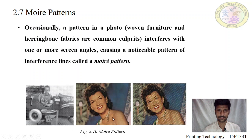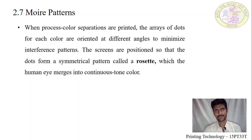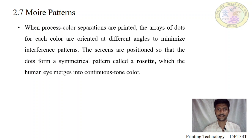This will show a blurred or out-of-focus result to the human eye. See this image — this is the original photo. If the screen angle is missed, we will get this type of output. In process color separations, the arrays of dots for each color are oriented at different angles to minimize this interference pattern or rosette pattern, which makes the human eye merge them into continuous tone color. If the human eye identifies a rosette pattern in different misalignment, then it is called a Moiré pattern.